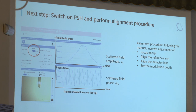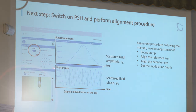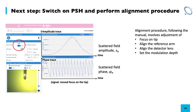When you switch on pseudo-heterodyne interferometry, the usual steps are: focus on the tip, align the reference arm, align the detector lens, and so on — as explained in the manual. Another step is to set the modulation depth as discussed: you tell the system your laser wavelength and set the piezo voltage accordingly. In this talk I want to focus on aspects that are maybe not so well known.